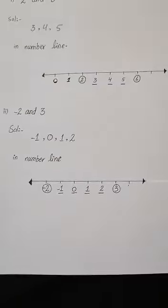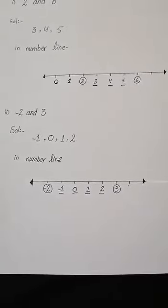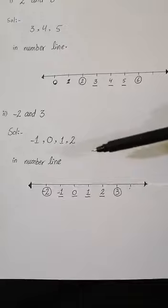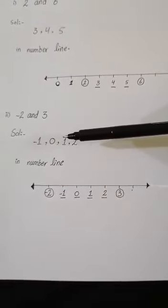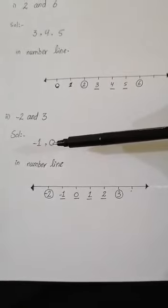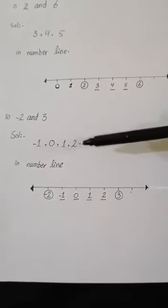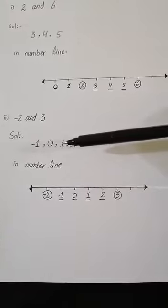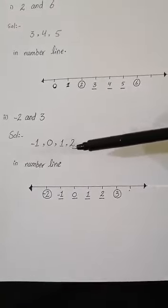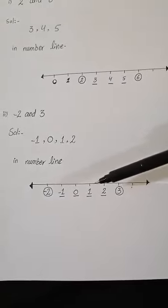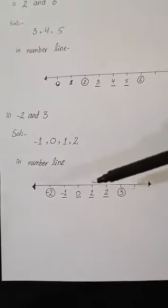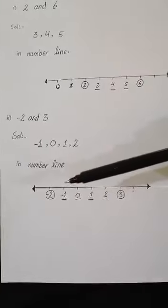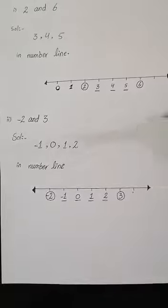The next one: we have minus 2 and 3. We have to write the numbers in between minus 2 and plus 3. Without using the number line, you can give the answer like this: in between minus 2 and plus 3, we have minus 1, because we start from minus 1 moving from left to right side. Then we have 0, then 1 and 2. Using the number line, draw it with a scale and write positive and negative numbers on the right and left sides of 0. So in between minus 2 and 3, we have minus 1, 0, 1, and 2.